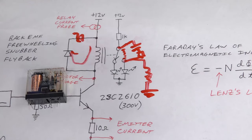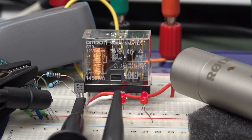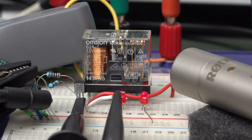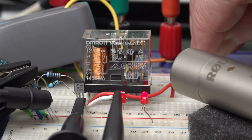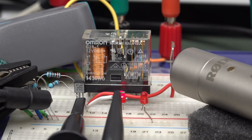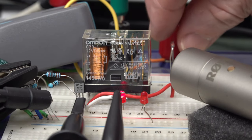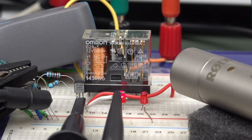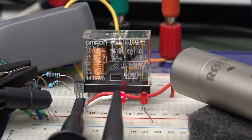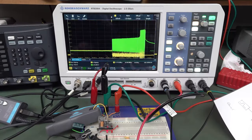An extra cool bonus: with the microphone right next to the relay, listen to the sound without the back EMF diode. Now listen to what happens when I plug in the back EMF diode — I do nothing else. It's changed! Lower amplitude! And now back without — listen! Clunk! It's louder! Leave it in the comments to figure out why that's happening.